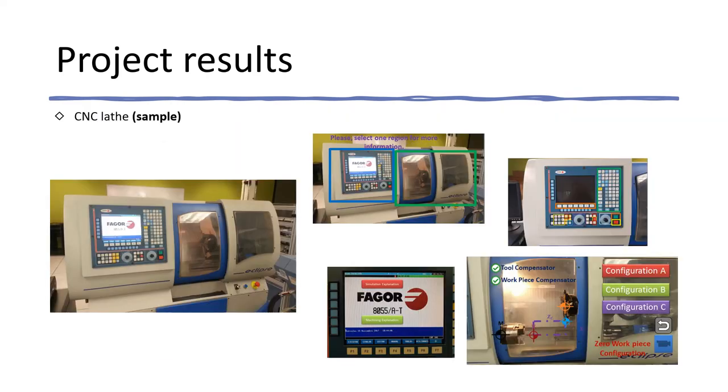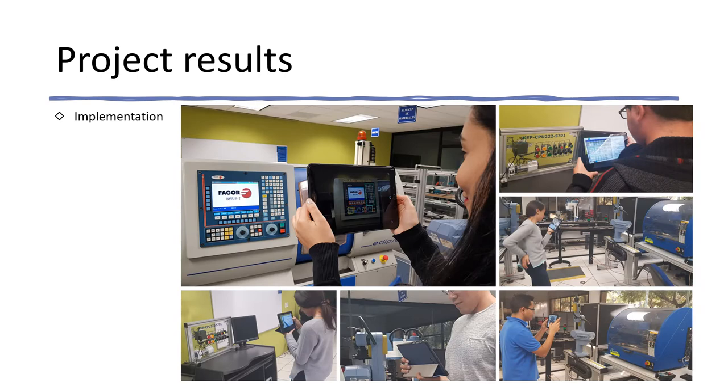This is an example of how augmented reality is displayed on the laboratory machine. In this case, on a lathe, where the configuration tools are displayed and the main elements are described, as well as instructional videos in the augmented reality capacity. Here are some students using the application to use the different devices in the manufacturing lab.